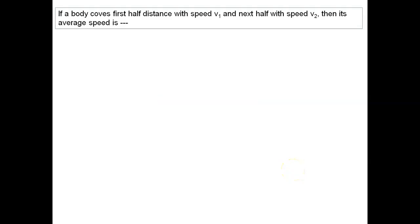In this illustration, a body covers first half distance with speed v1 and next half with speed v2. Let's say total distance is x. The body is covering, as given to us, first half distance x by 2 with speed v1.